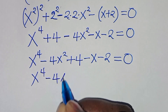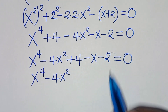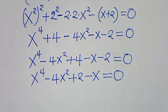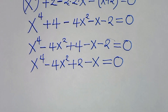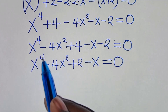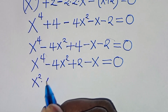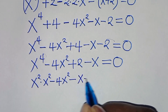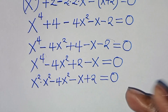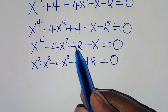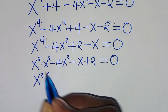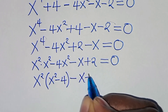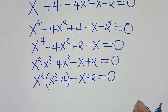Now the next step: we can express this as x to the power of 4 minus 4x to the power of 2, then minus x, then plus 2, this is equal to 0. x squared is common here, so we can factor out x squared, so that in the parentheses we have x squared minus 4, close the bracket, then subtract x plus 2, this is equal to 0.